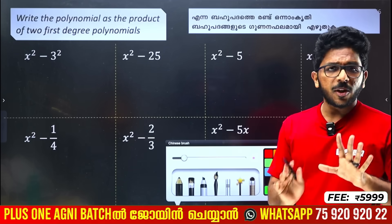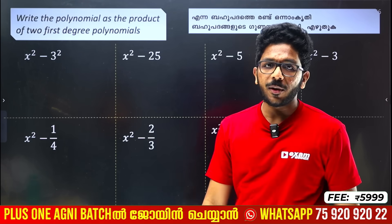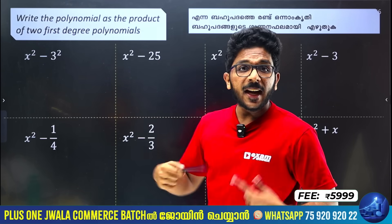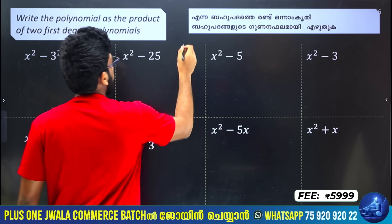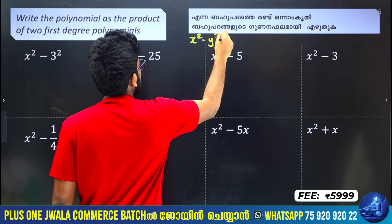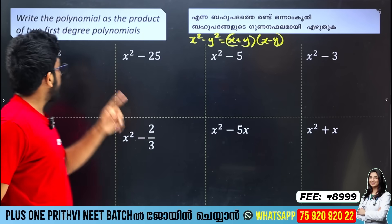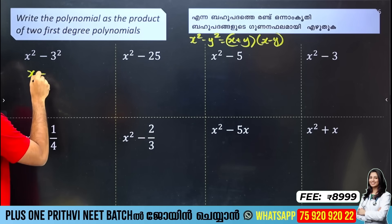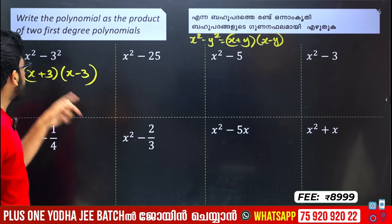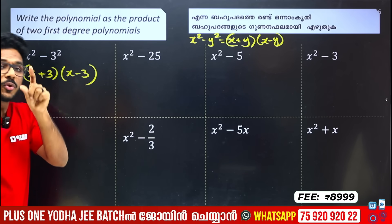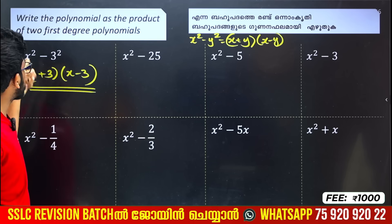We will solve the first topic. The question is: write the polynomial as the product of two first-degree polynomials. Using the formula x² minus y² equals x plus y into x minus y — for example, x² minus 3² is very simple: x plus 3 into x minus 3. This is a product of two first-degree polynomials.